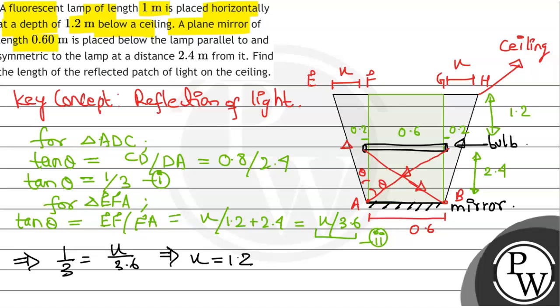So now the length of reflected path on the ceiling, that will be 2X plus 0.6, which is X plus X plus 0.6. So it will be 2.4 plus 0.6, that is simply 3 meters. So here is our answer. Thank you very much.